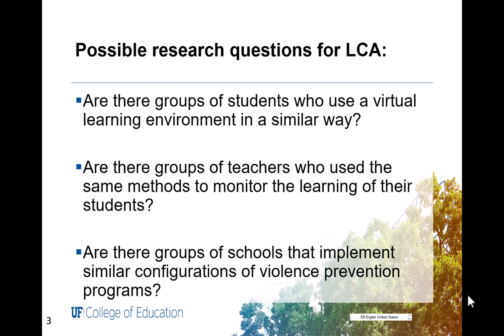The third question is, are there groups of schools that implement similar configurations of violence prevention programs? Here indicators could be, for example, if the school offers counseling programs, if schools offer behavior modification programs.